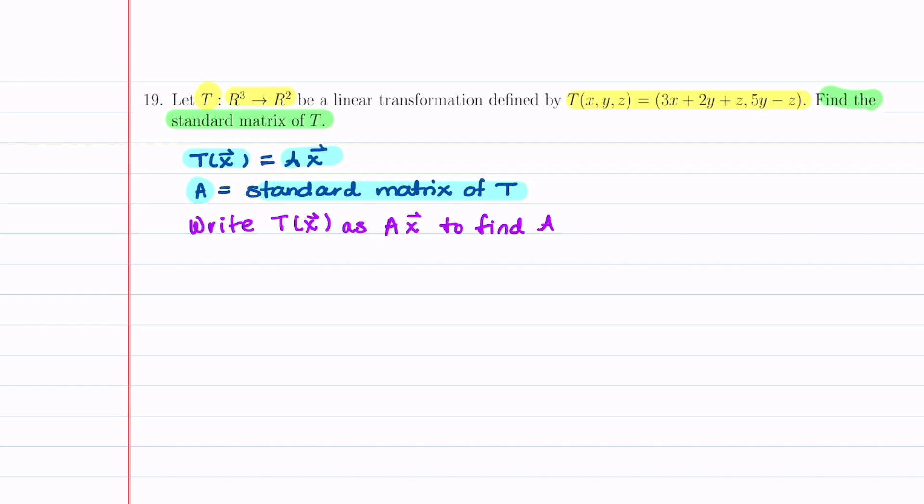So to solve this problem and find the standard matrix of T, what we're going to do is we're going to write T of X as A times X, and then we're going to be able to back out what matrix A is.